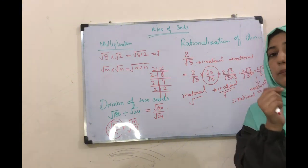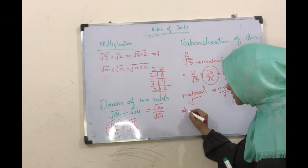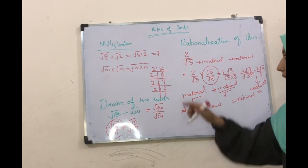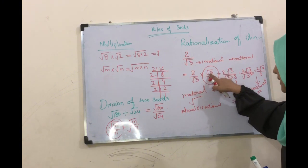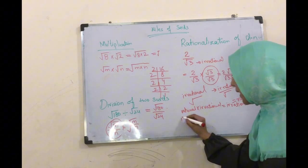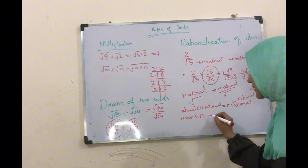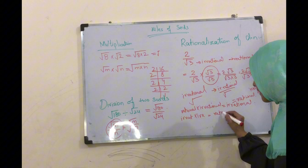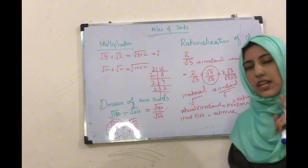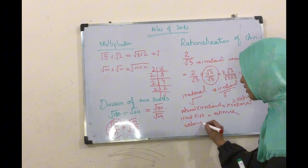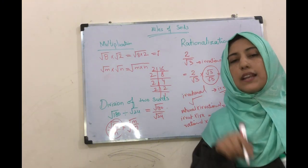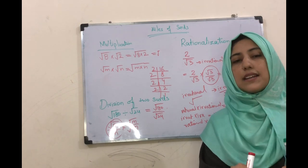یہاں سے ایک اور important point ہمارے پاس generate ہوتا ہے۔ وہ important point کیا ہے: جب ہم rational number کو irrational سے multiply کرتے ہیں تو irrational number ہی آتا ہے۔ لیکن جب آپ irrational number کو irrational سے ہی multiply کرتے ہیں تو آپ کے پاس rational number آتا ہے - جو کہ یہاں ہم نے کیا۔ Rational کو rational سے multiply کرنے سے کیا آتا ہے؟ آپ نے مجھے comment section میں دینا ہے - I would like to see your answer in the comment section below.